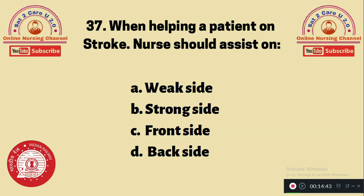Question 37: When helping a patient who has had a stroke, a nurse should assist on — A. Weak side, B. Strong side, C. Front, D. Back side. For assisting a stroke patient, the nurse should assist on the weaker side. The answer is A.